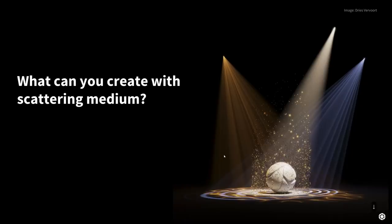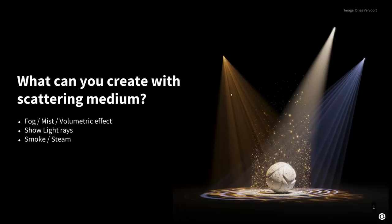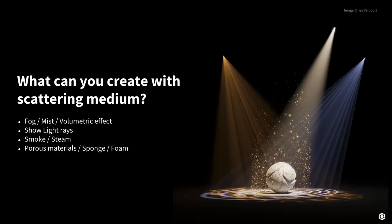What can you create? You can create fog, mist, and volumetric effects. You can use the Scattering Medium to show light rays from focused lighting like a spotlight. You can use it for smoke and steam as well, especially if you get your hands on some VDB textures - you can create some realistic looking plumes of smoke. And you can also use it for porous materials like sponge or foamy materials where we have a lot of holes in them.